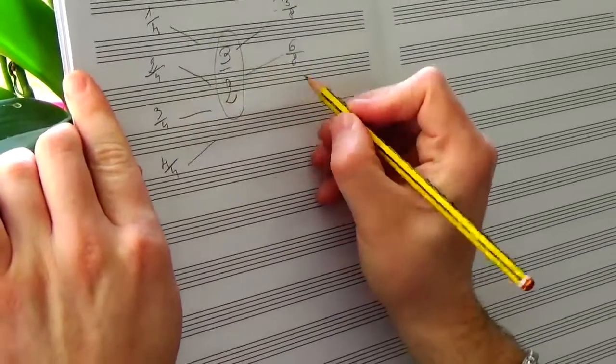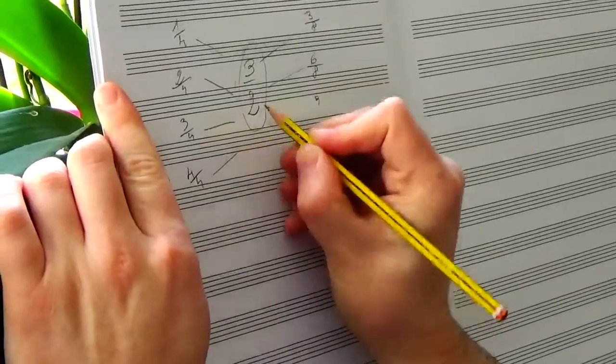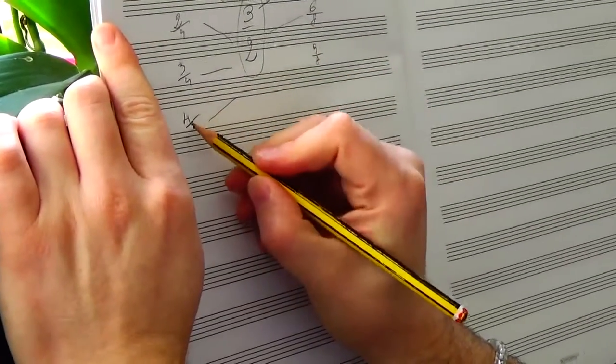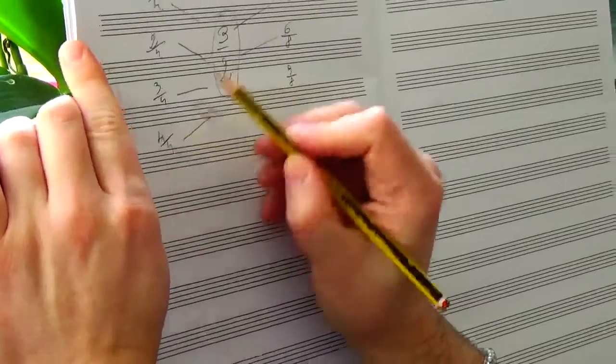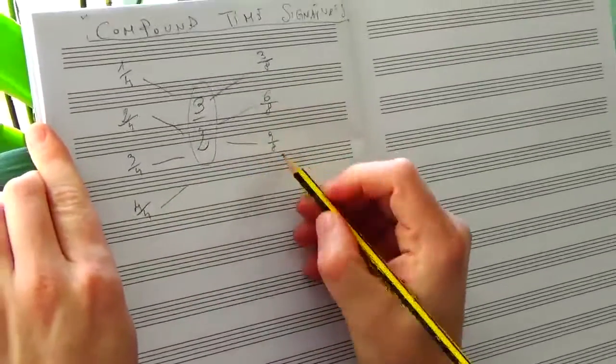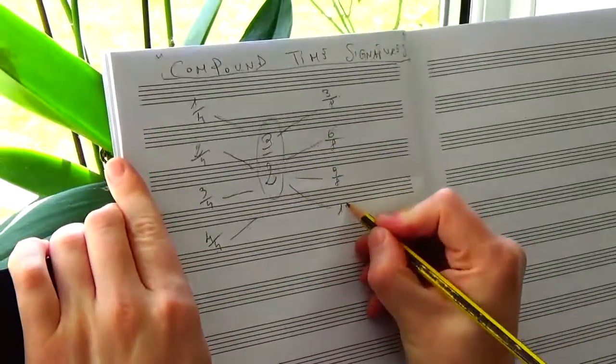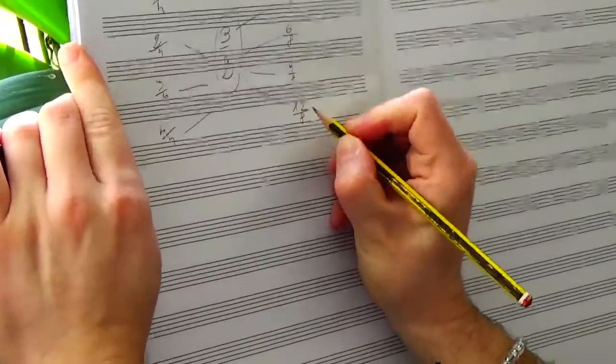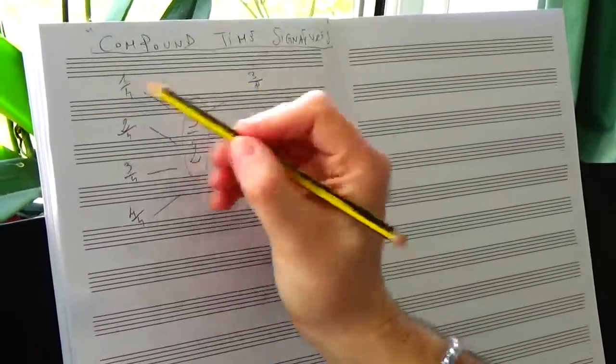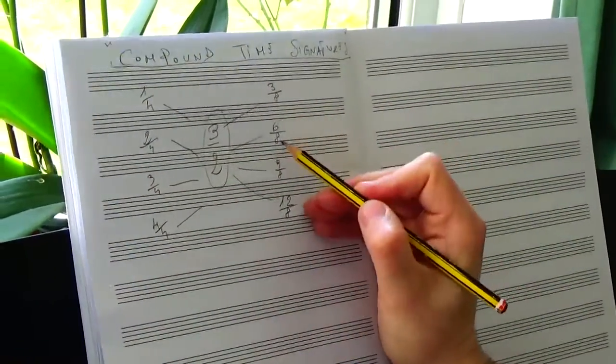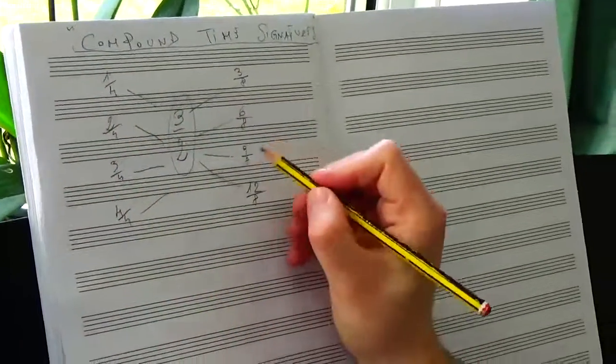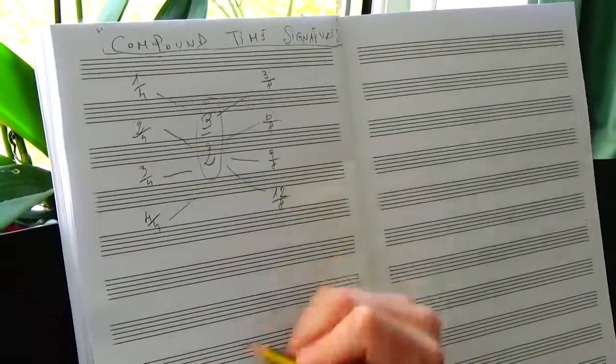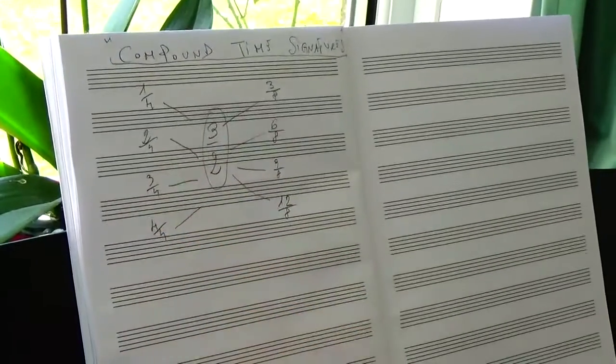Then we have 3 times 3, that is 9, and 4 times 2, that is 8 again. And then we have 4 times 3, that will be 12, and 4 times 2, that is 8. So the 3 eighth is coming from 1 fourth, the 6 eighth is coming from 2 fourths, the 9 eighth is coming from 3 fourths, and the 12 eighth is coming from 4 fourths.